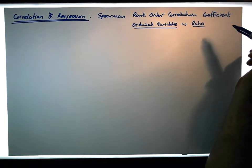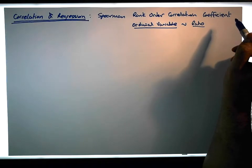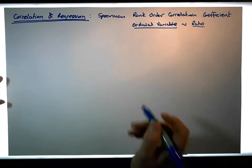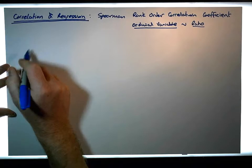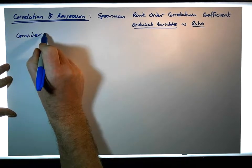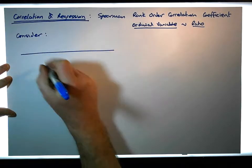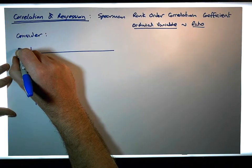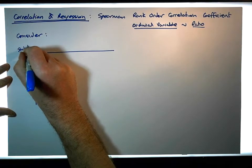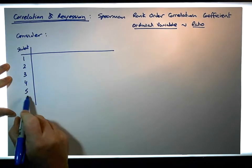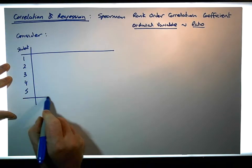Primarily, as I said, we would use it when we've deviated from one or two of the assumptions associated with the Pearson product moment correlation coefficient. So just as an example, let's consider the following data. I have a number of students — I'm going to try to keep this simple. So we have student one, two, three, four, and five.